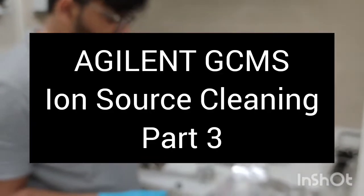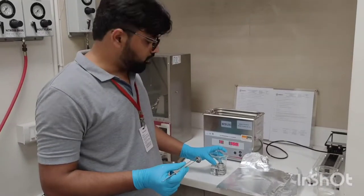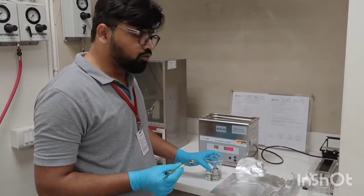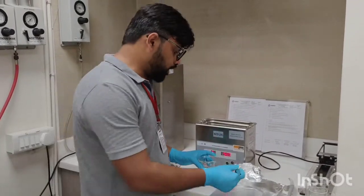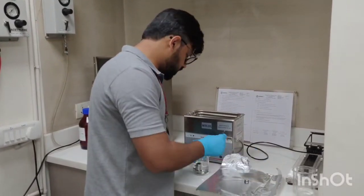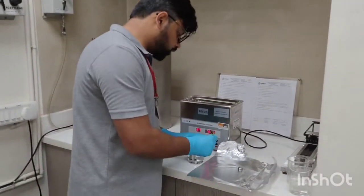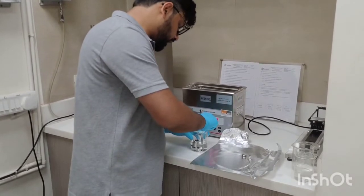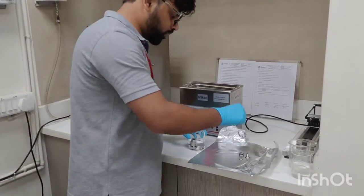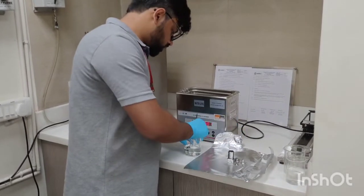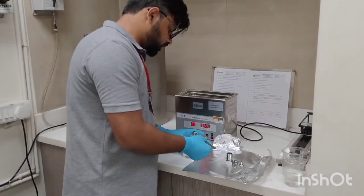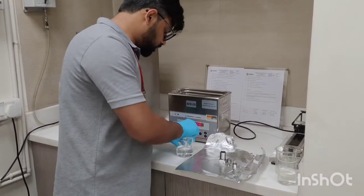We have sonicated all these parts in three different solvents. Initially we did the sonication with acetone, followed by hexane, and finally we have sonicated with methanol. We are doing this cleaning and sonication with different solvents so that we remove all the impurities, different polarity impurities which are present. After sonication we place all these parts on aluminum foil.